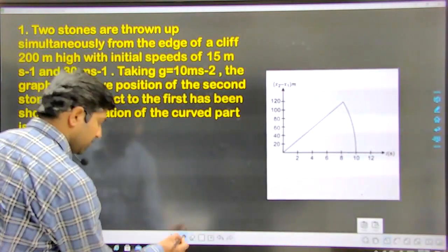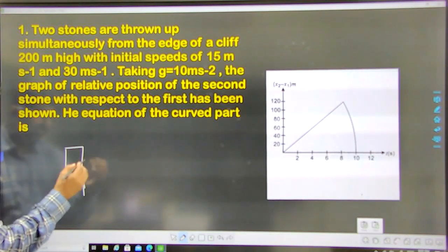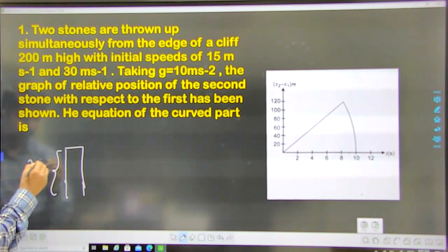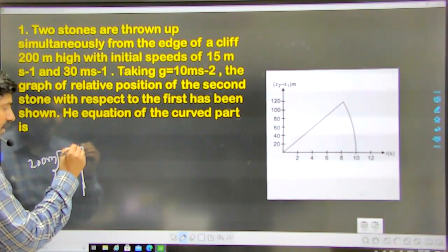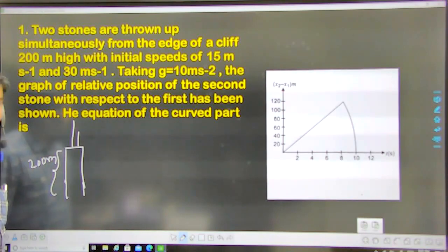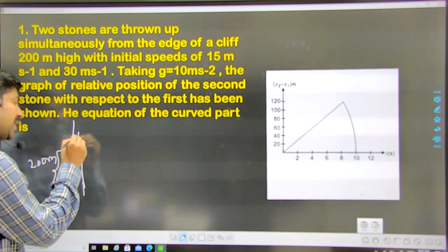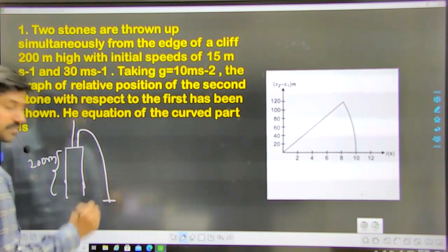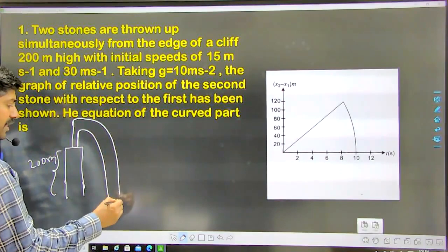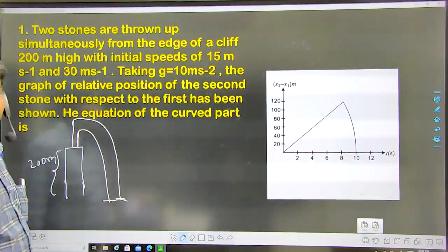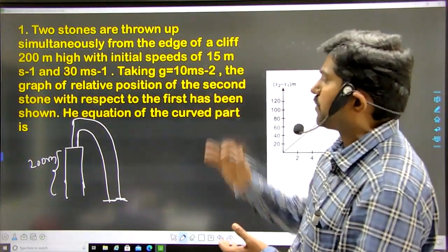For example, consider a cliff of height 200 meters. From this cliff, two bodies are projected — one with 15 meter per second, the other with 30 meter per second. The one projected with 30 meter per second goes to greater height. The one projected with 15 meter per second reaches the ground first, and later the second particle projected with 30 meter per second comes down to the ground. Now let me write equations for both of them separately.